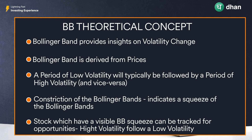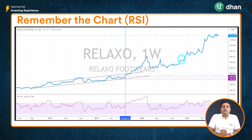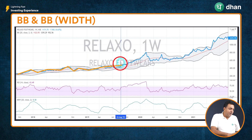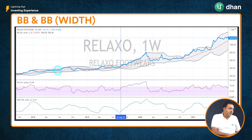Let's understand this further by looking at a chart example. This is the same chart we covered when discussing RSI — I have now overlaid the Bollinger Band on it. The stock was in a visible uptrend, and in the highlighted section the band was very narrow. When prices moved out of this band, they gave a phenomenal up move from around the 600 level to around the 1100 level. The upper shadow is the upper band, the lower shadow is the lower band, and the red line in between is the 20-week simple moving average.